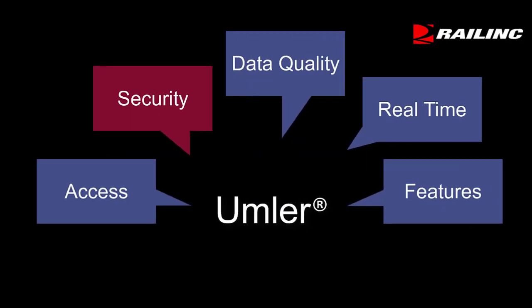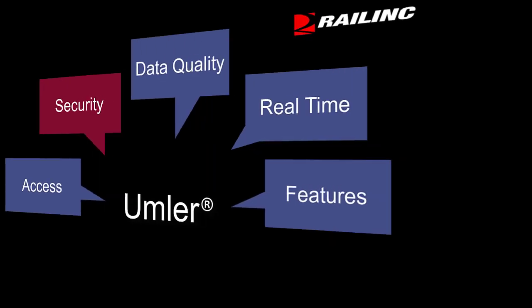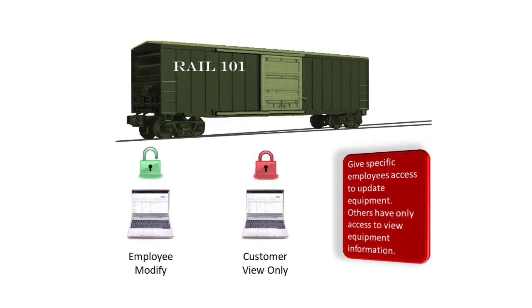In this video, I'm going to give you a brief security overview for Rail Inc.'s Umler application. Umler provides users with security options as a major benefit. The security model in Umler enables equipment owners to define permissions and rights for users. Equipment owners can give specific employees access to update equipment.